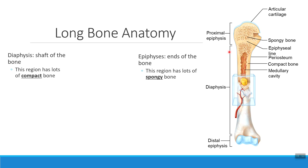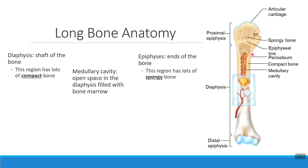So we've talked about the shaft of the bone — the diaphysis — and the two ends of the bone, the epiphyses. When we look inside the diaphysis, the shaft of the bone, you'll notice there's an open space inside. That open space is called the medullary cavity. In adults, the medullary cavity is filled with yellow bone marrow, as we see here. In children, that marrow would actually be red.